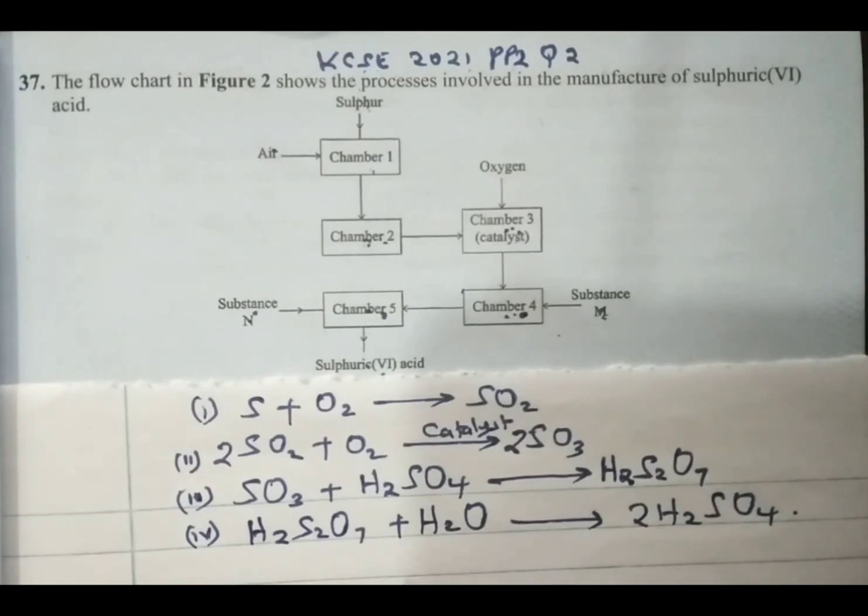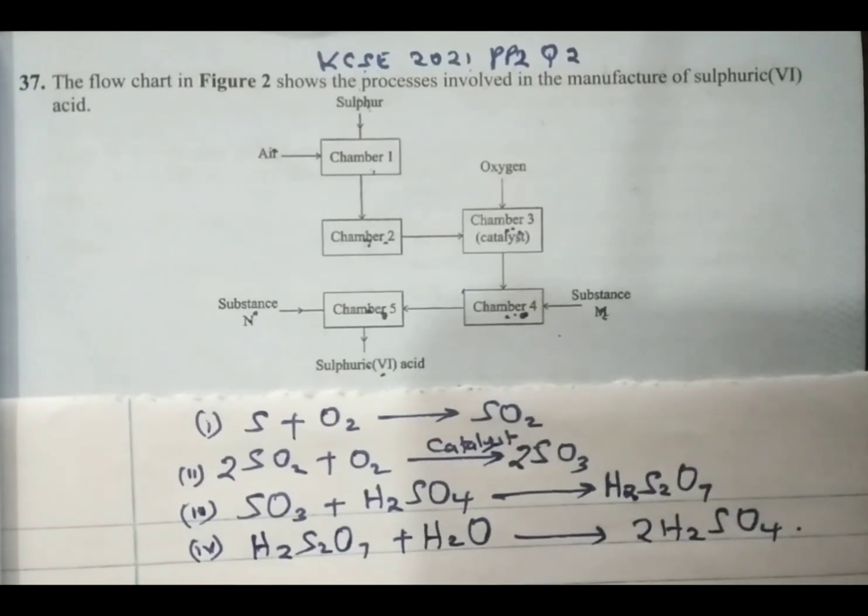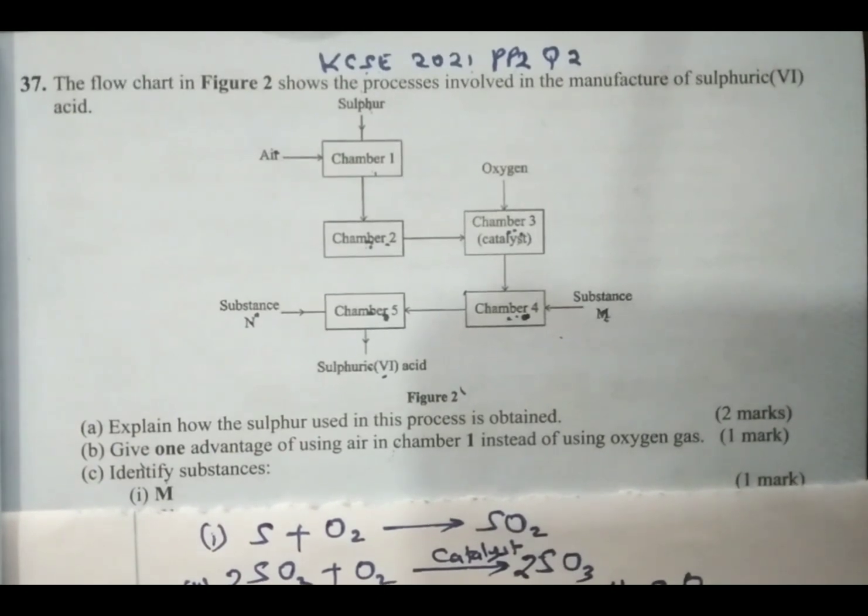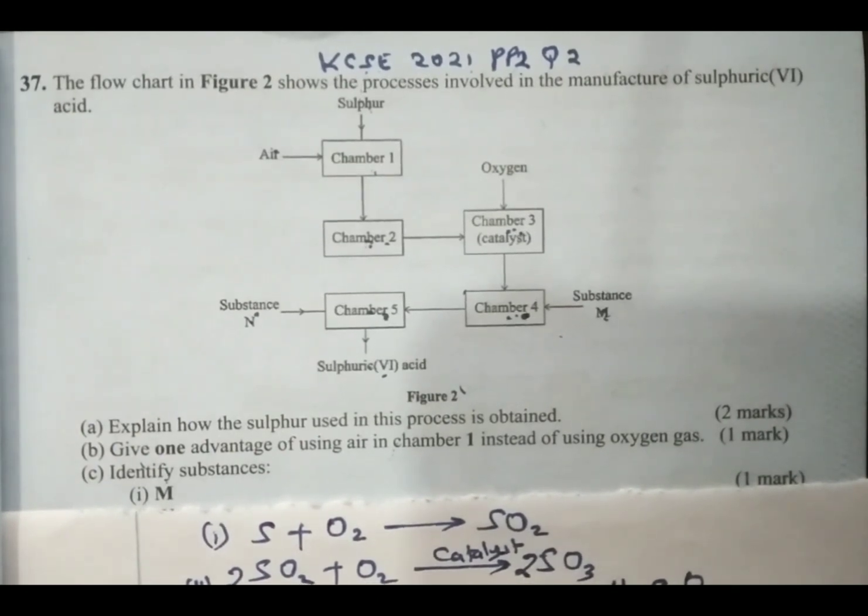That is a simplified summary on the industrial manufacture of sulfuric acid in the contact process. Let us look at the given questions.